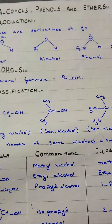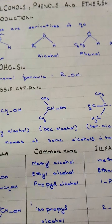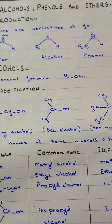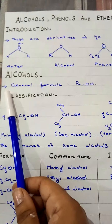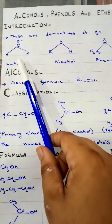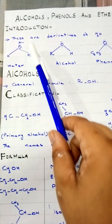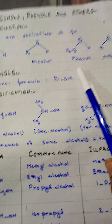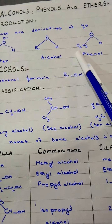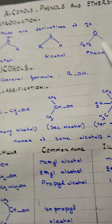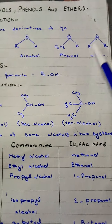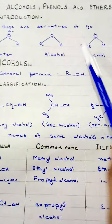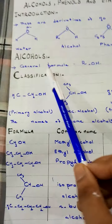Alcohols, phenols and ethers are classes of organic compounds which are much closer to water in structure and hence considered as derivatives of water. Look here — this is the structure of water (H₂O), this is alcohol (ROH), this is phenol (C₆H₅OH with a phenyl group), and last is ether. You can see the resemblance of all these structures with water, so these are called derivatives of water.